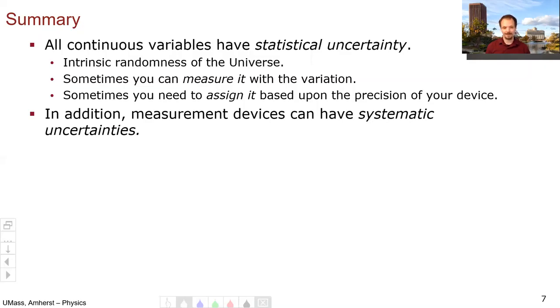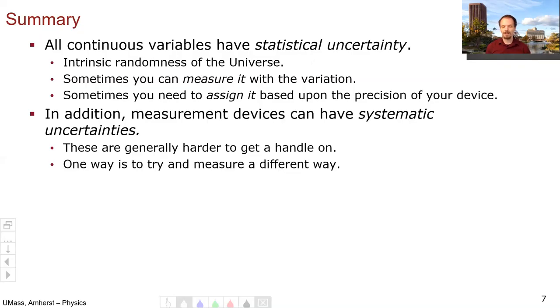In addition, measurement devices can have systematic uncertainties. For example, my watch ran slow. It was precise, but it ran slow. It was systematically off. These types of uncertainties are generally much harder to understand and much harder to get a handle on. You really have to think about it. In our example, how did we find it? We found it by measuring with a different watch and then comparing to a really good watch, our laser and atomic clock hypothetical setup. But what if we didn't have the laser atomic clock setup? We just had my watch and your watch. How would we know whose watch is right? So you can see that these systematic uncertainties can quickly become the difficult thing to understand.